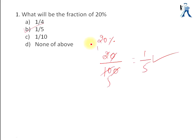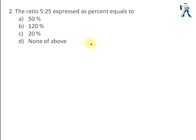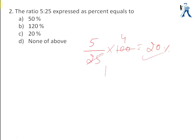Next question: the ratio 5 to 25 expressed as a percent. We write 5:25 as 5 divided by 25, and to convert a fraction to percentage we multiply by 100. Simplifying gives us 20%. The answer is option C.